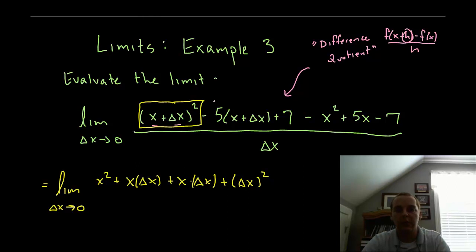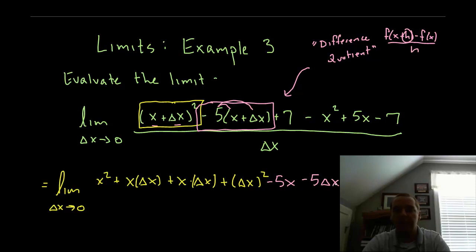Switching colors I'll do this one in red. Minus five times x plus delta x, that'll be minus 5x when I distribute, minus 5 delta x plus 7. And here in orange I'll just finish out the rest: minus x squared plus 5x minus 7.